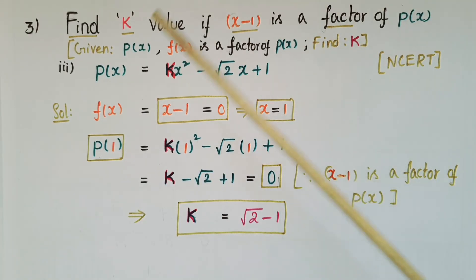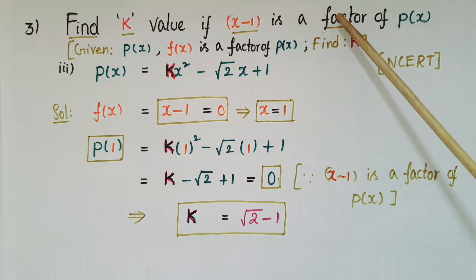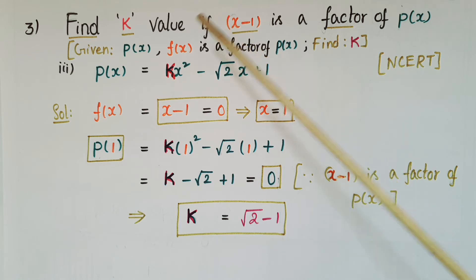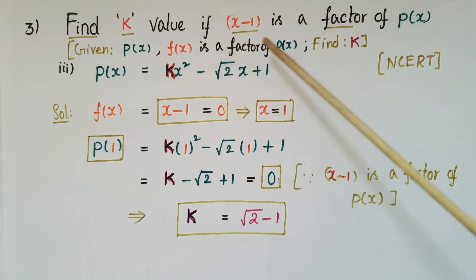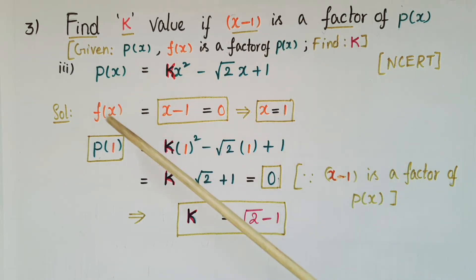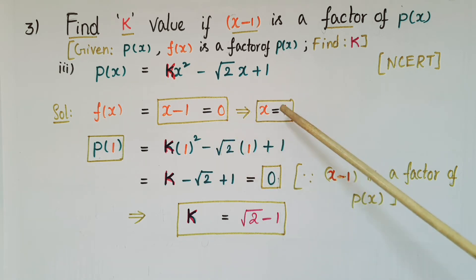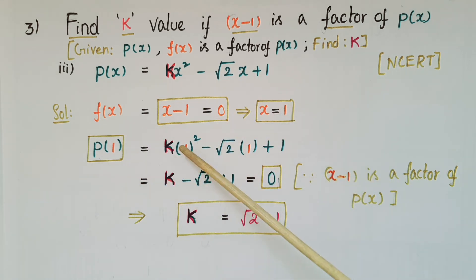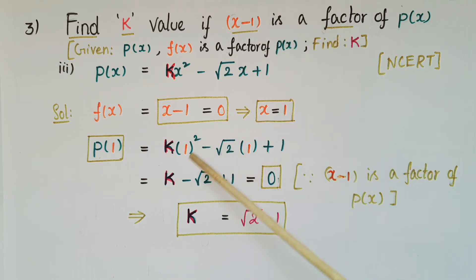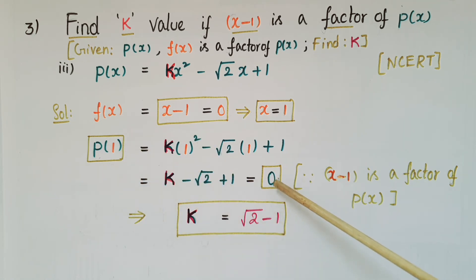This is another type of problem: find the k value if x minus 1 is a factor of p(x). The given polynomial is p(x) = kx² - √2·x + 1, and x minus 1 is already given as a factor. Set x minus 1 equal to 0, so x equals 1. Then p(1) equals k times 1² minus √2 times 1 plus 1, which is k minus √2 plus 1. Since x minus 1 is a factor, p(a) equals 0 by the Factor Theorem, so p(1) equals 0, giving k equals √2 minus 1.